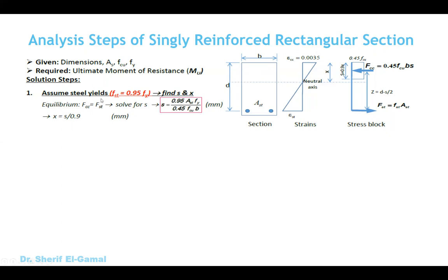The first step is to assume that the steel yields. According to different codes including the bridge standard, good design requires the section to be under-reinforced, meaning the steel yields first before the concrete crushes. So our first assumption is that this section is designed well and therefore the steel will be yielding. Assuming steel yields means the stress in the steel f_st equals 0.95 f_yield, and from making equilibrium between the two horizontal forces we can get the unknown S. The compression equals 0.45 f_cu × B × S and the tension equals f_st × A_st.